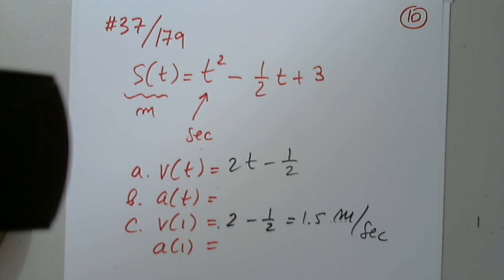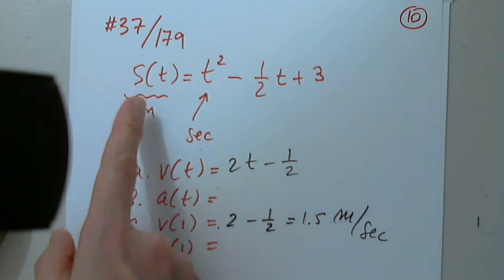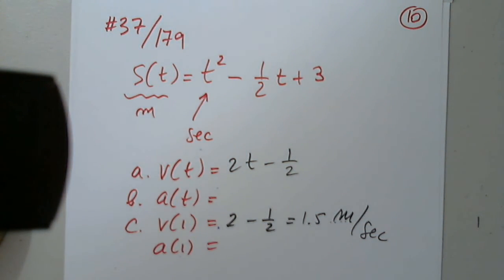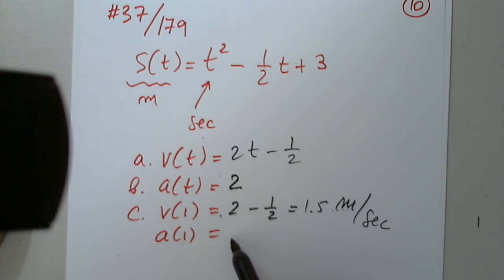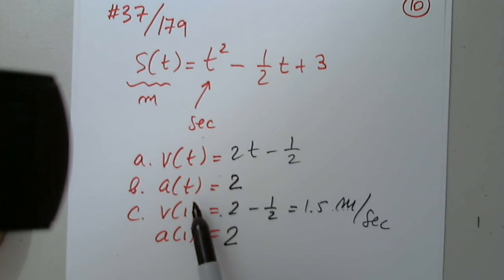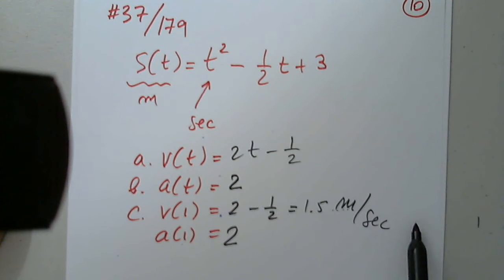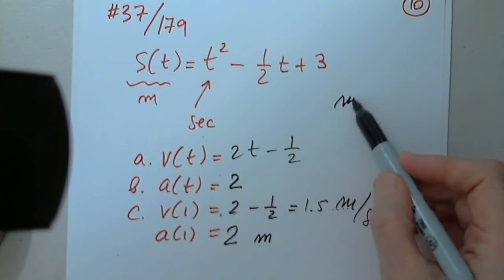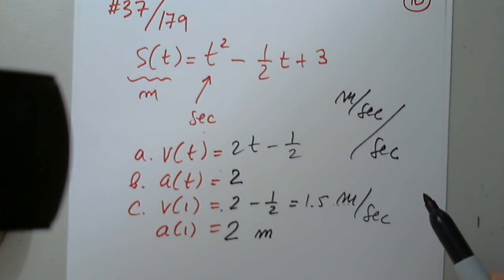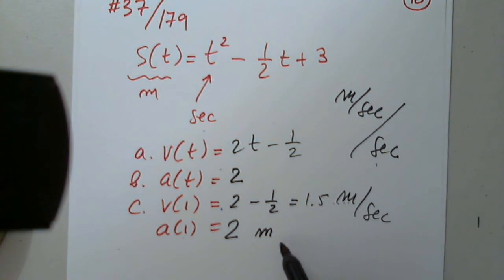The measurement unit is meters per second — great job. Now the acceleration is the rate of change of velocity with respect to time. What would that be? Just 2 — exactly. Now plug in t equals 1. Be careful with the measurement unit — this is the rate of change of velocity over time, so it cannot have the same measurement unit. It's meters per second per second.